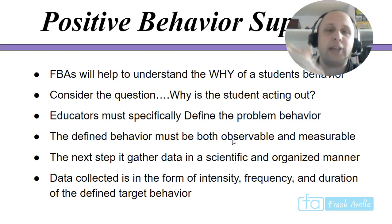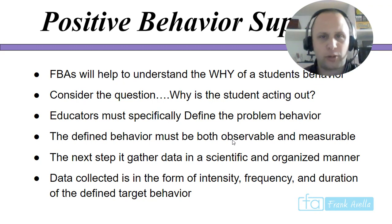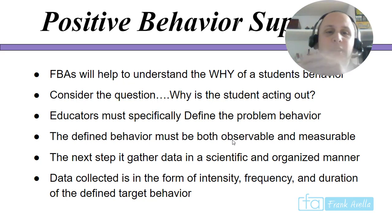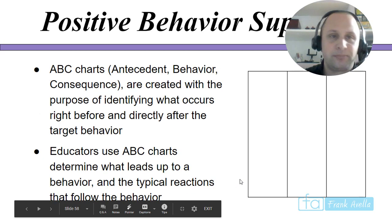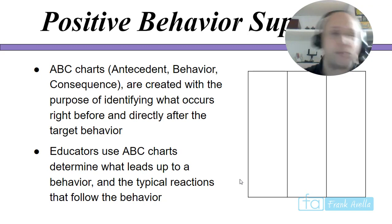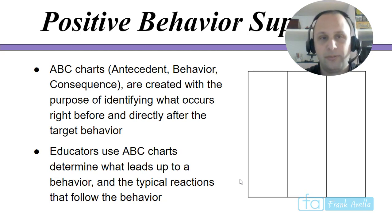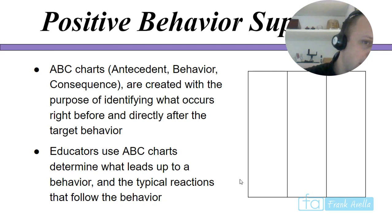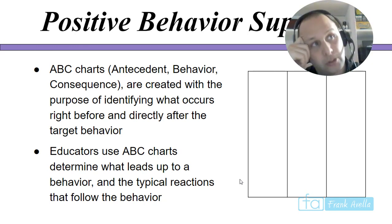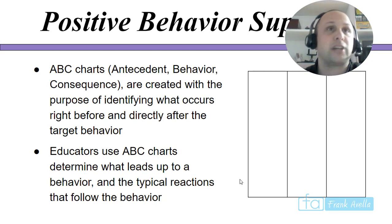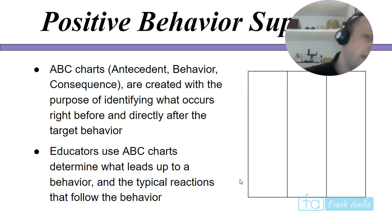Functional behavioral assessments are used to understand the 'why' of a student's behavior. Educators must define the problem — the defined behavior must be both observable and measurable. The next step is to gather data in a scientific and organized manner: intensity, frequency, and duration of the defined target. ABC charts identify what occurs right before and directly after the targeted behavior. The antecedent is what happens before; you want to know what's causing the student to act up, what the behavior is, and what consequences the child has.